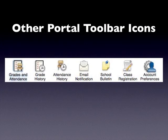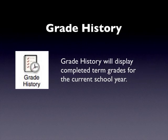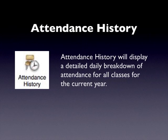Now let's talk about some of the other icons across the top of your portal toolbar. Clicking the Grade History icon will display the completed term grades for the student in the current school year. The Attendance History icon will display a detailed daily breakdown of attendance for all classes for the current year, keeping in mind that at middle years attendance is only taken at homeroom.